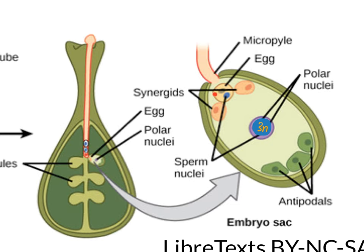The nucleus of the sperm cell that made it into the egg cell also fuses with the nucleus of the egg cell that's already there. So that one haploid nucleus of the egg plus the one haploid nucleus of the sperm fuse, and when they do that they form a diploid nucleus. So now this cell is called the zygote. And this cell is still called the central cell, but it's now a triploid central cell.